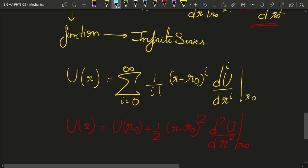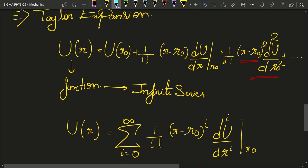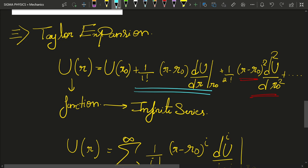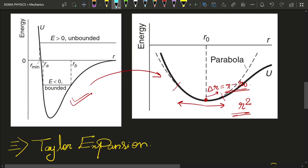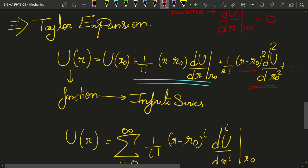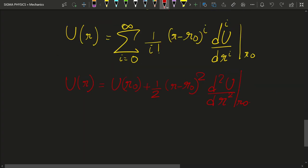You might notice that I have dropped the first-order term as well — and I did so on purpose. That term is actually zero. I want you to think about why: it is because we have a minimum at R naught. The condition for a minimum is that dU/dR evaluated at R naught equals zero. Since that is true, we can neglect the first-order term, because R naught is a minimum point.